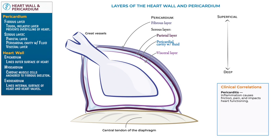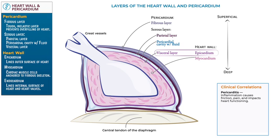Return to the diagram and indicate that the visceral layer of the pericardium is the epicardium of the heart wall. Then show the thick layer of myocardium — this is the layer that contracts and relaxes to pump blood during the cardiac cycle. As another clinical corollary, in myocardial infarction, known as heart attack, the myocardial layer is injured. Myocardial infarction occurs when coronary artery blood flow is obstructed, resulting in cardiac muscle cell death.